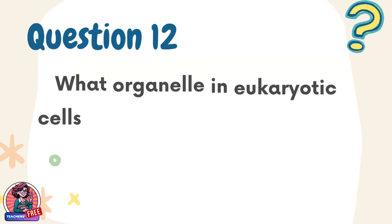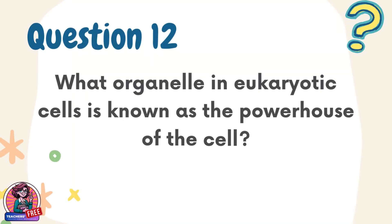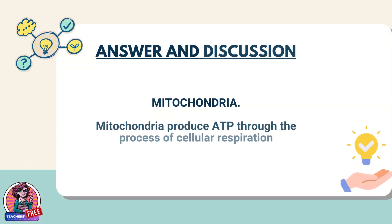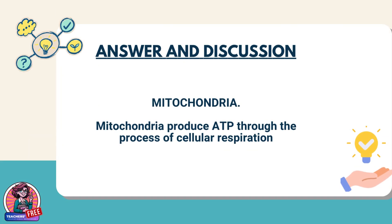Question 12. What organelle in eukaryotic cells is known as the powerhouse of the cell? Answer: Mitochondria. Mitochondria produce ATP through the process of cellular respiration.